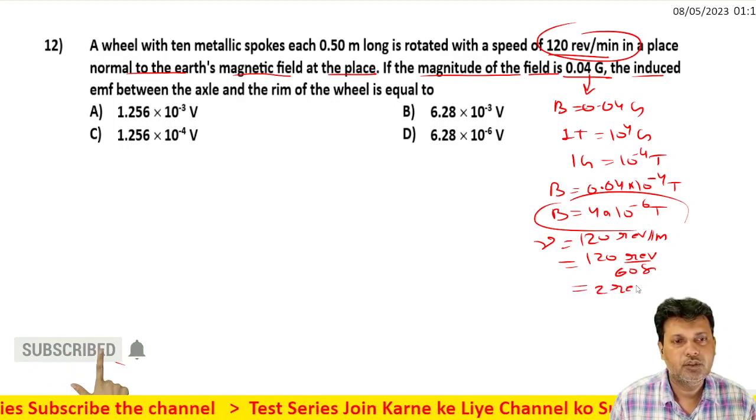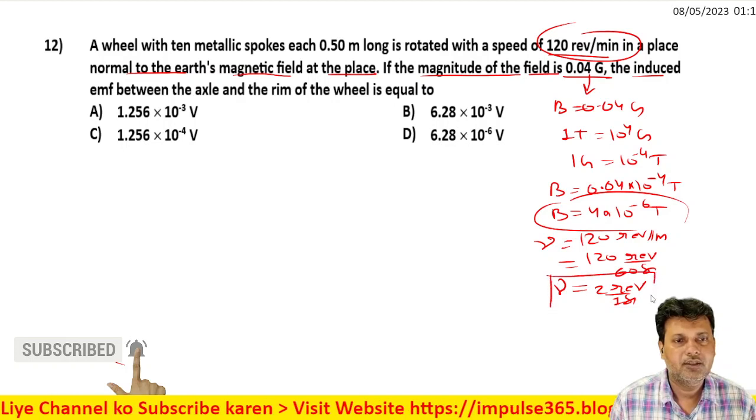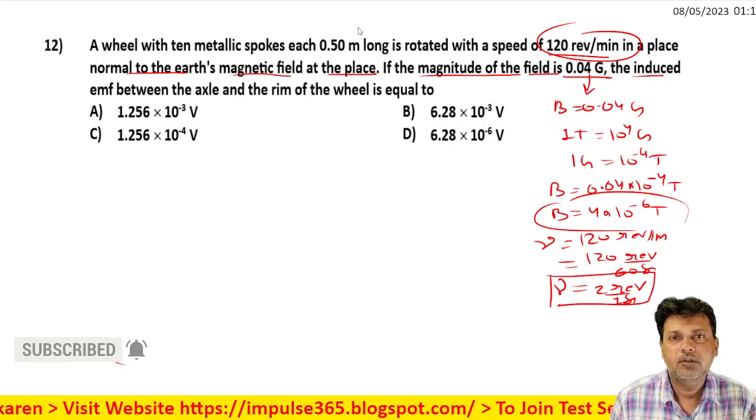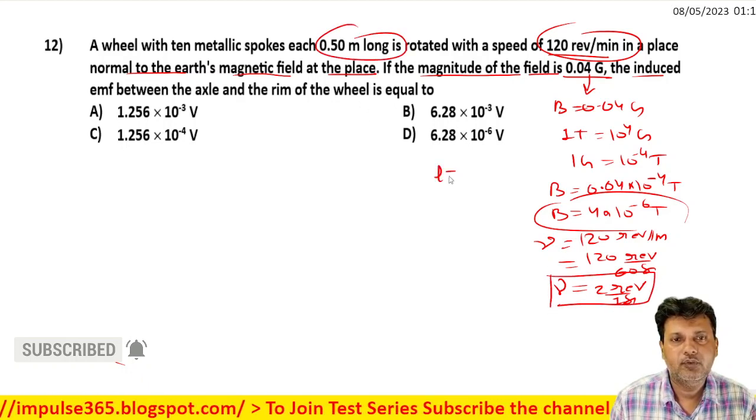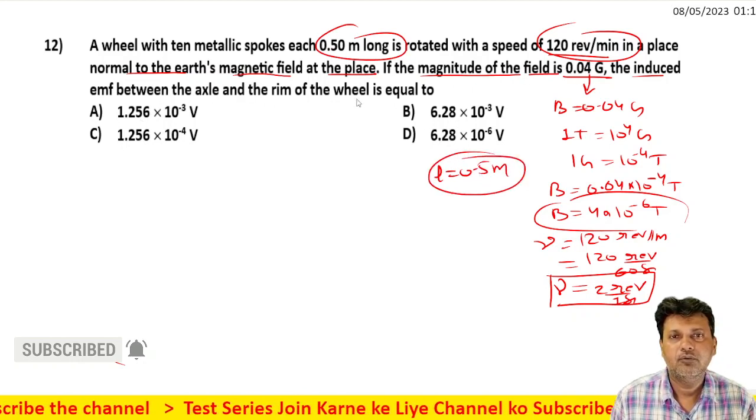So we can write 120 revolutions by 60 seconds, which gives us 2 revolutions per one second. This is the frequency. The length L is given as 0.5 meters.